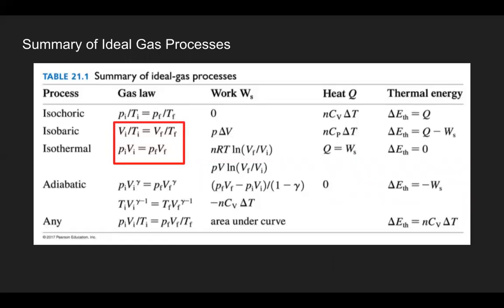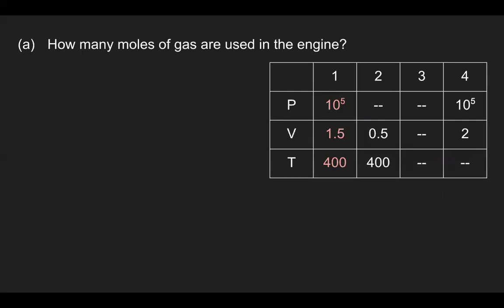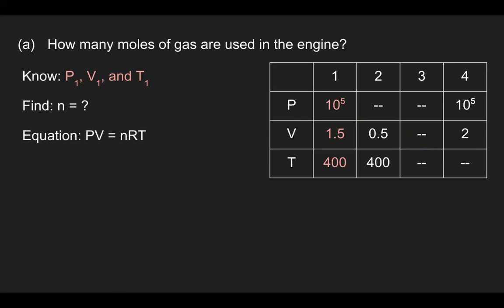Referring to the summary of ideal gas processes in Table 21.1, we highlight the key equations for the next steps. The first question asks how many molecules of gas are used in the engine. We focus on point one since it provides the most information. Using PV = nRT and solving for n, substituting all values with the universal gas constant, we get the number of moles as 45.1.